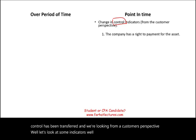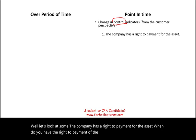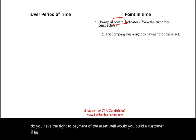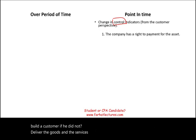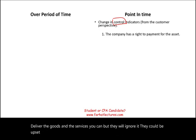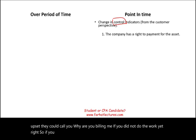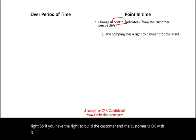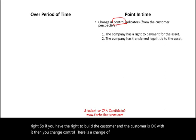First indicator: the company has a right to payment for the asset. Would you bill a customer if you had not delivered the goods and services? They could be upset — why are you billing me if you did not do the work yet? So if you have the right to bill the customer and the customer is okay with it, then there was a change of control.